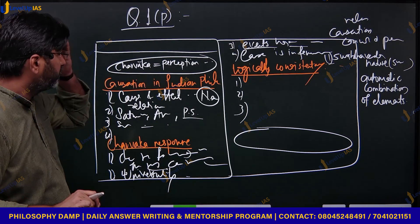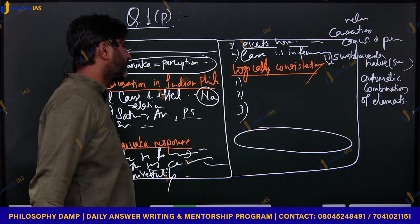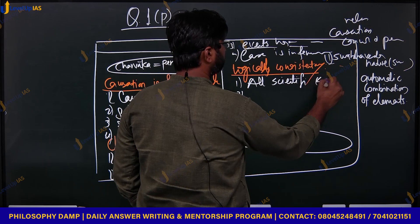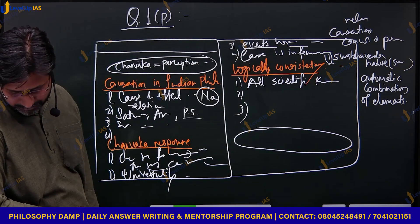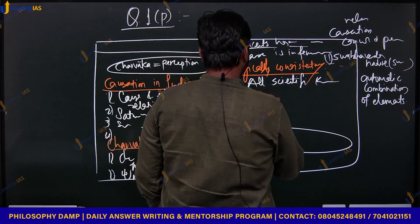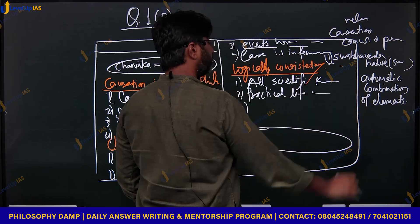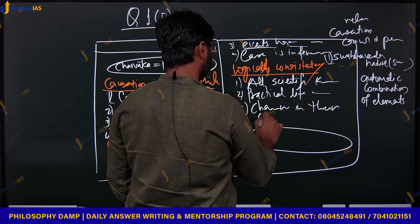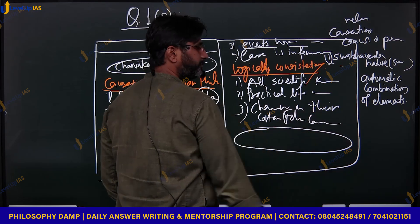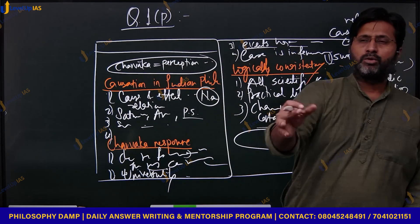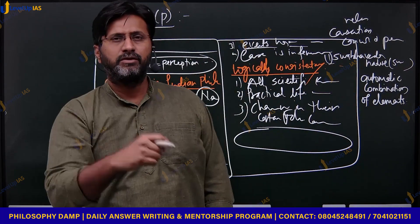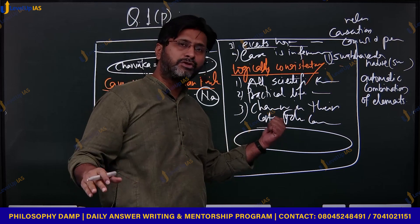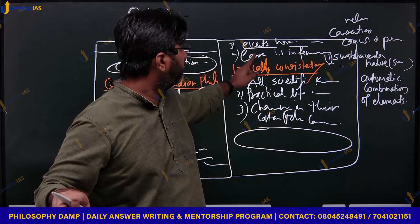But what is the problem with denying causation? First, all scientific knowledge becomes invalidated. Second, practical life becomes problematic. Third, Charvaka themselves in their daily life certainly follow causality - if the roads are muddy, Charvaka themselves infer that it must have rained. Without causation, how do they make this inference? And they live their life accordingly. So Charvakas do follow causation, which means they are not logically consistent in denying it.